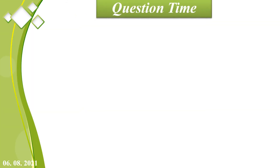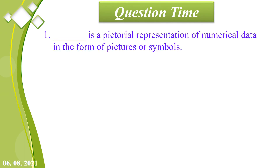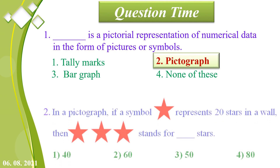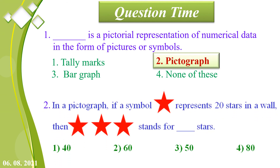Question time! First: a pictograph is a pictorial representation of numerical data in the form of pictures or symbols — the answer is pictograph. Second: in a pictograph if one star represents 20 stars, then 3 stars stand for how many? Very good — 60, because 3 into 20 equals 60.